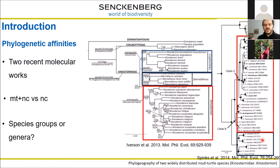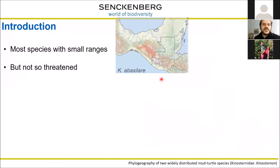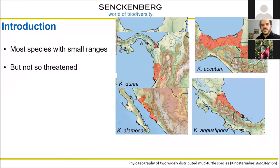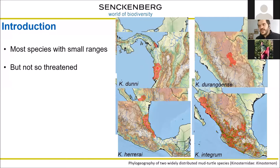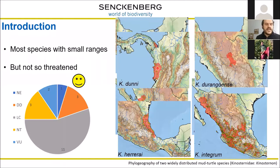They suggested that the position of Sternotherus may have been due to past introgression. Most species in Kinosternon have relatively small distributions, but contrary to what could be expected for turtles with small ranges, they are not that threatened — only one species is threatened, while the others are in really good condition.